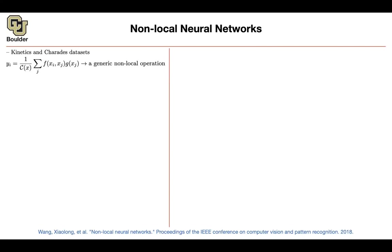What is a non-local operation? Let's take a look at this general form: y_i = 1/C(x) · Σ_j f(x_i, x_j) · g(x_j). I'll explain all these terms. Starting with i: if we had an image, i could be the indices for our pixels. Now that we have a video there is also a time dimension, so i is indexing not only the x and y coordinates of your image but also the time coordinate — i is indexing the output position in space and time.